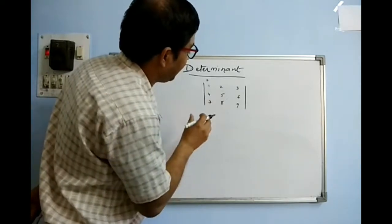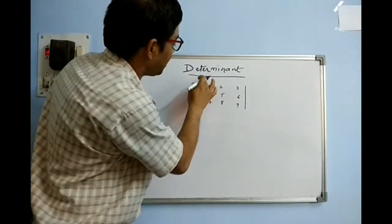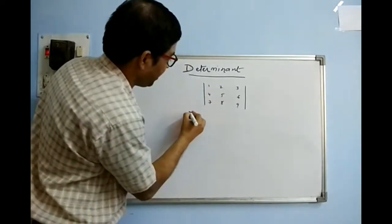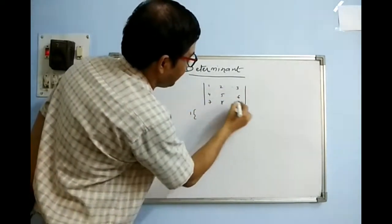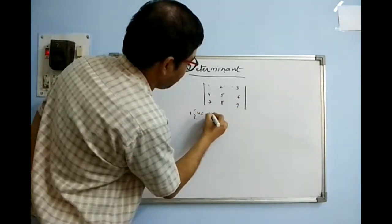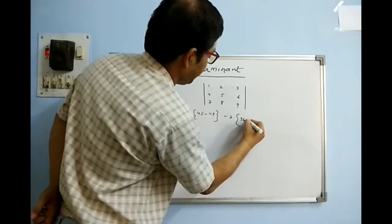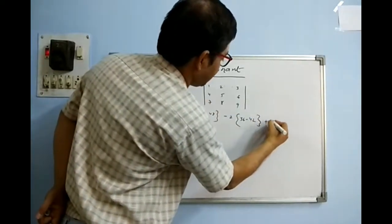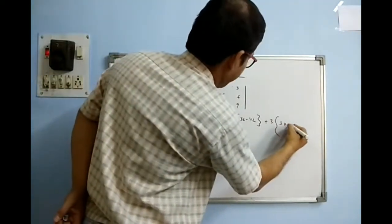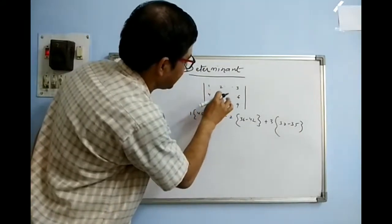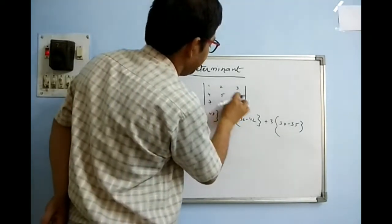The value of a determinant can be found by expanding it either along a row or along a column. Suppose I am expanding along R1. Expanding along R1: the corresponding row and column elements cancel, leaving 4 elements. So it is 1 into (5×9 − 6×8), minus 2 into (4×9 − 7×6), plus 3 into (4×8 − 5×7) — that is the criss-cross way: this minus this, this minus this, this minus this.